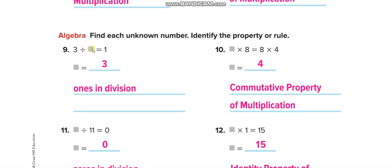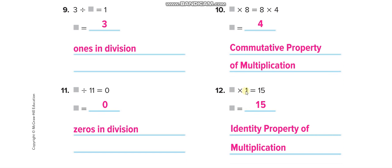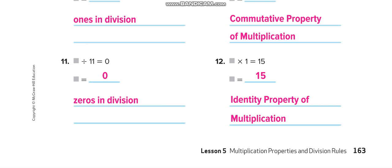Identity property of multiplication involves multiplying by 1. Switching numbers means commutative property of multiplication. For the missing number: 3 divided by something equals 1 — that's 3, ones in division. For commutative property, 8 times 4 becomes 4 times 8. What times 1 equals 15? That's 15 — identity property. What divided gives 0? That's zeros in division.